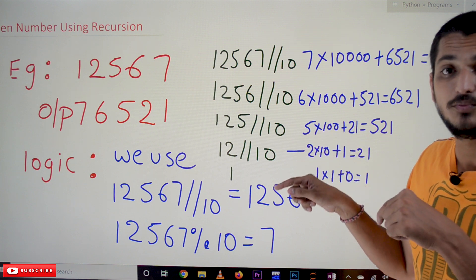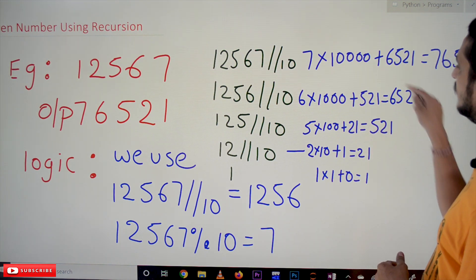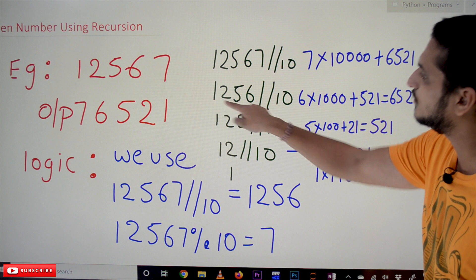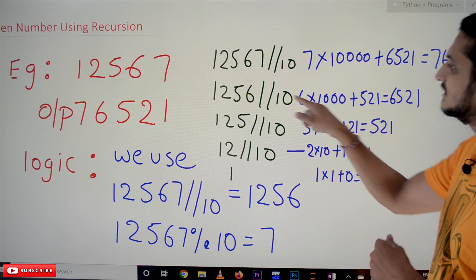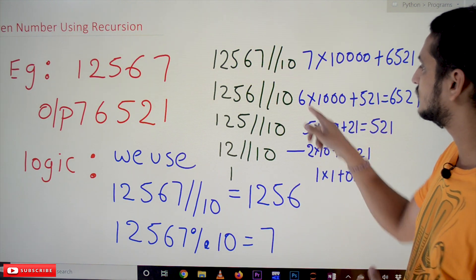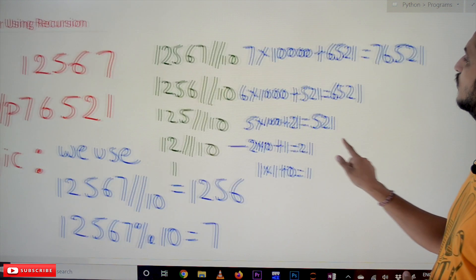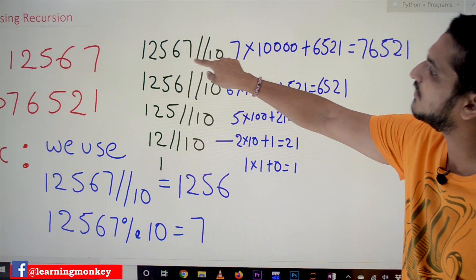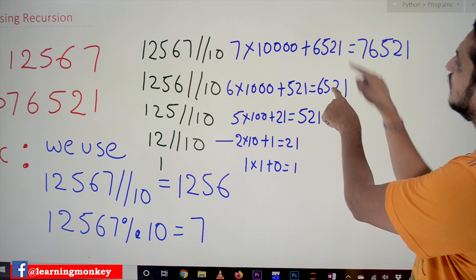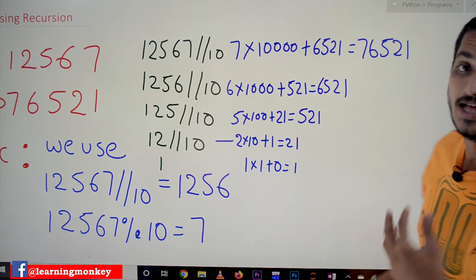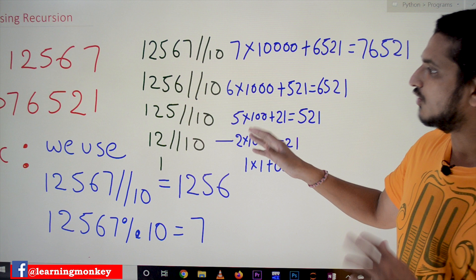125 mod 10 gives 5. This 5 should be in the 100's place, so 5 into 100 plus 21 equals 521. Then 1256 mod 10 gives 6; 6 into 1000 plus 521 equals 6521. Finally, 12567 mod 10 gives 7; 7 into 10000 plus 6521 equals 76521. This is how we identify the reversed output.